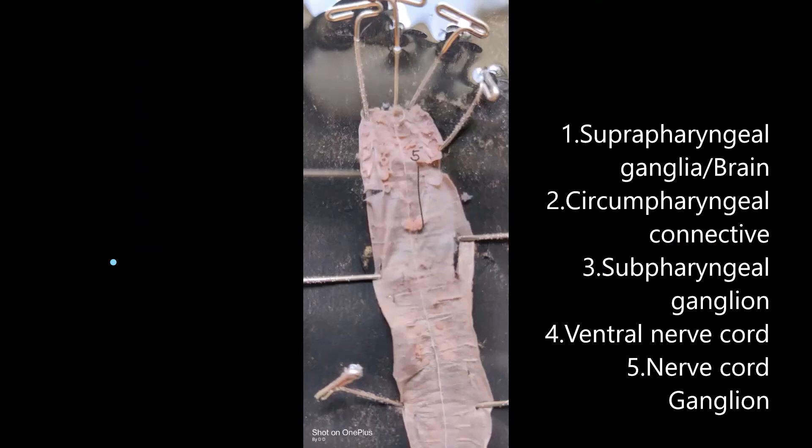Once you clear the entire digestive tract, you will be able to see the nerve cord running on the ventral side and at the anterior end, the nerve ring.